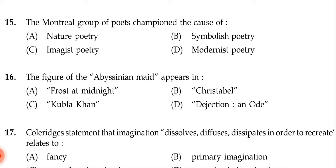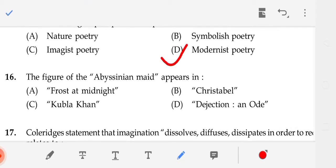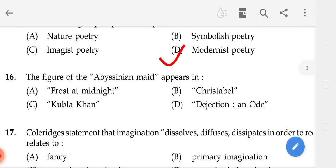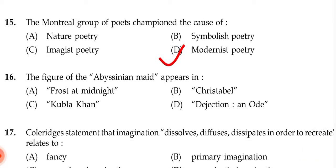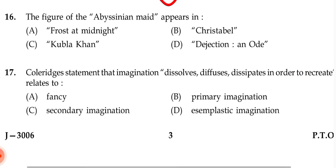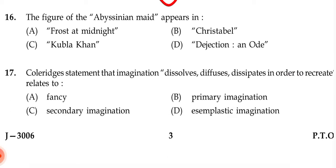The Montreal Group of poets championed the cause of — the correct answer is D, that is modernist poetry.